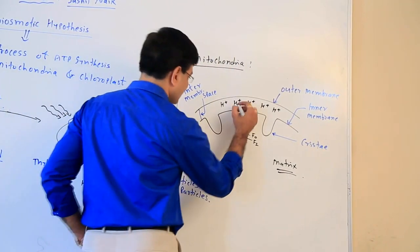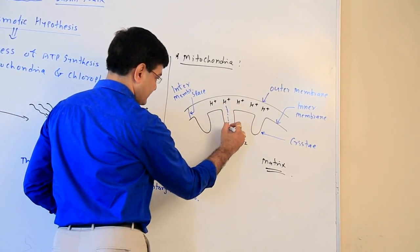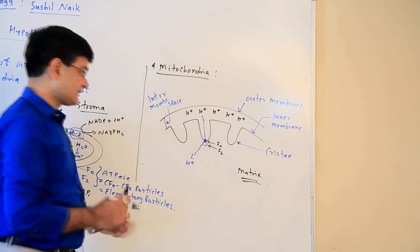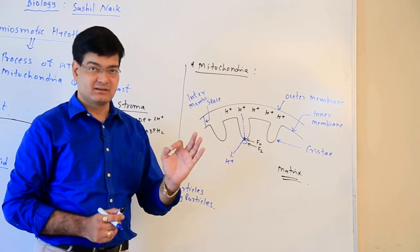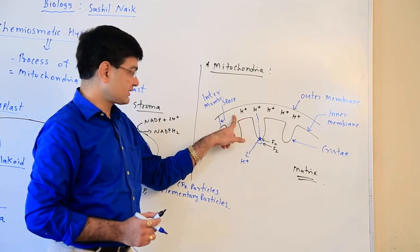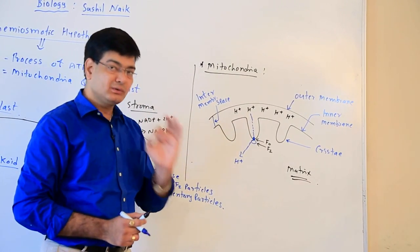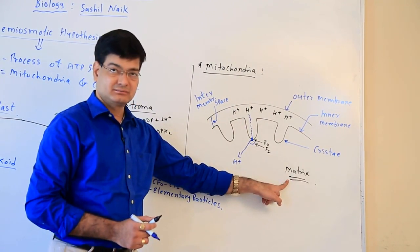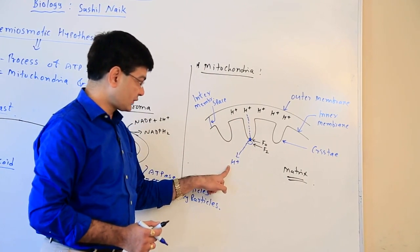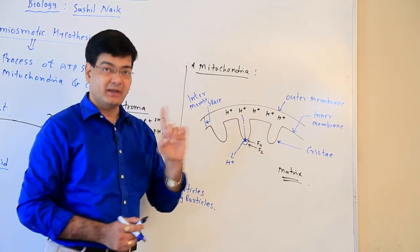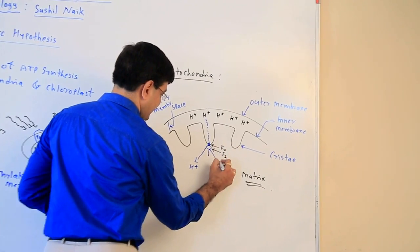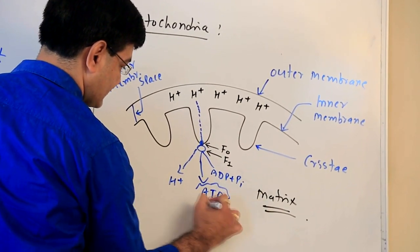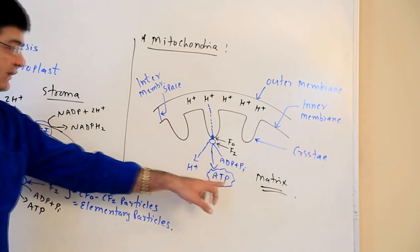Due to this proton gradient, H+ ions move towards the matrix by the opening of the F0 ion channel. A decrease in the pH of the intermembranous space induces the opening of the F0 ion channel, and protons from the intermembranous space rapidly diffuse towards the matrix. The energy released by this rapid diffusion causes a configurational change in F1, making it active as ATPase. ADP is again phosphorylated with inorganic phosphate to form ATP, and this is how ATP synthesis occurs inside the matrix of the mitochondria.